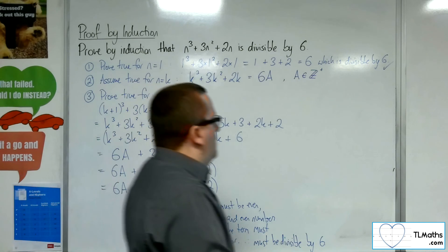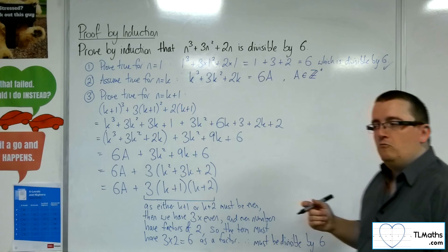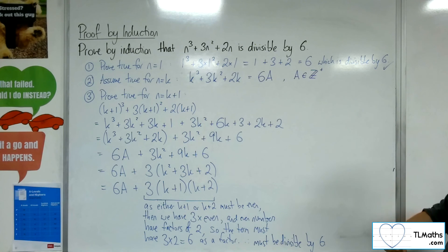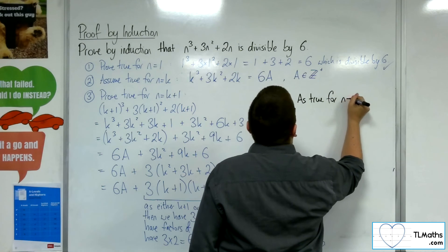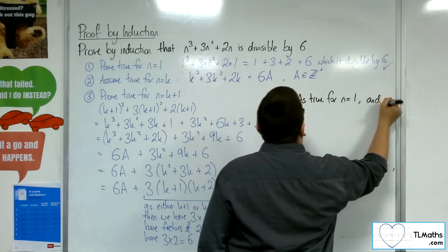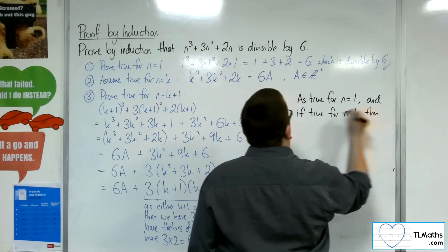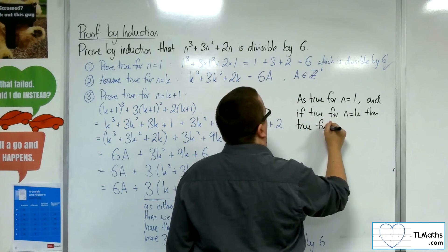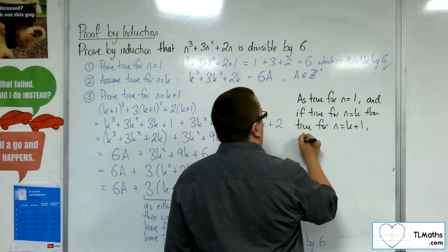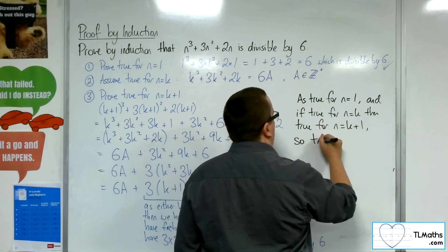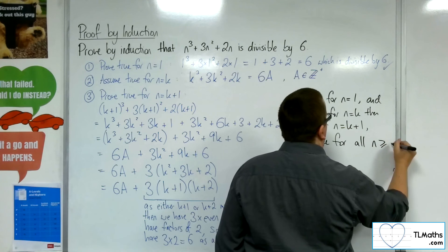So, concluding statement-wise. So, we must be sick of this now. But let's keep writing it down so that we are embedding it. So, as true for n equals 1, and if true for n equals k, then true for n equals k plus 1, as we've just shown. So, true for all n greater than or equal to 1.